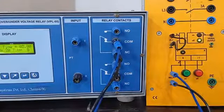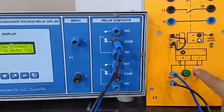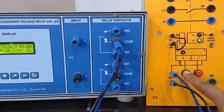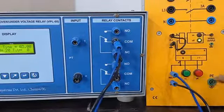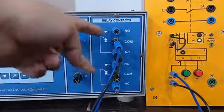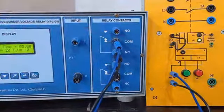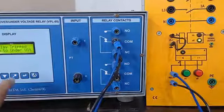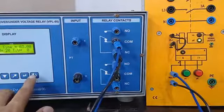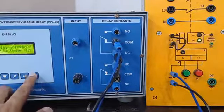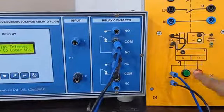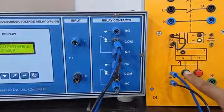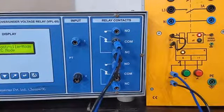Now in this condition, if I try to close the circuit breaker by pressing the ON button, I would not be able to do that. Reason: the relay has tripped and there is a transition of its contacts. In order to re-close the circuit breaker, I will have to reset the relay. Here I am going to reset the relay. Relay has been reset. Now if I press the ON button, the circuit breaker is closed.